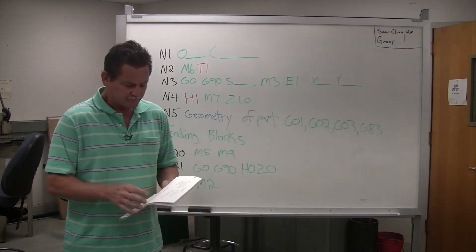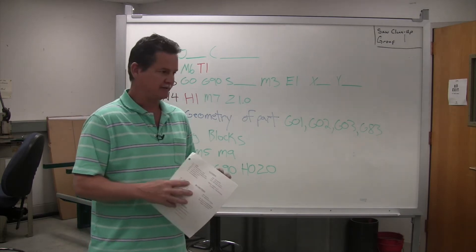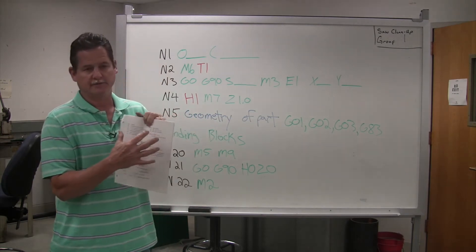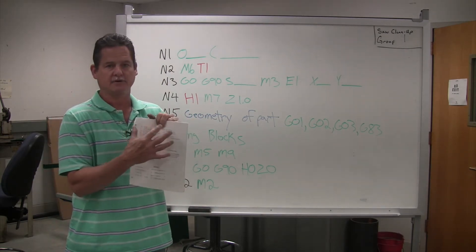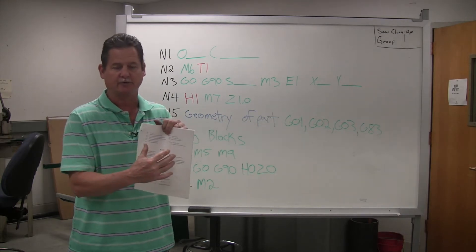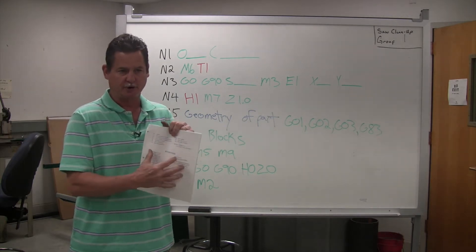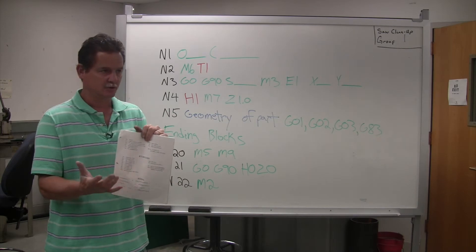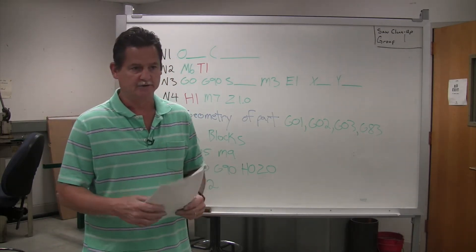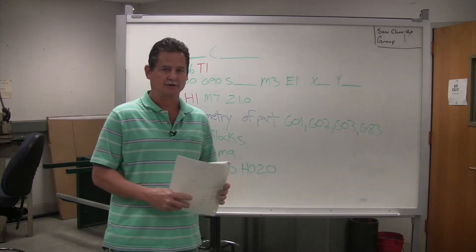So the first page of your handout has to deal with G-codes. This is very helpful. If you can't memorize them, it's very helpful to have this with you so as you're writing your geometry for your program, you can determine what you need to do. Everybody's all scared of G-code, but G-code is very simple.